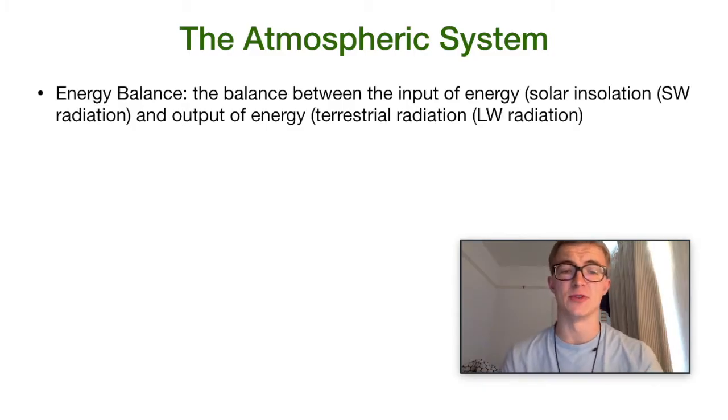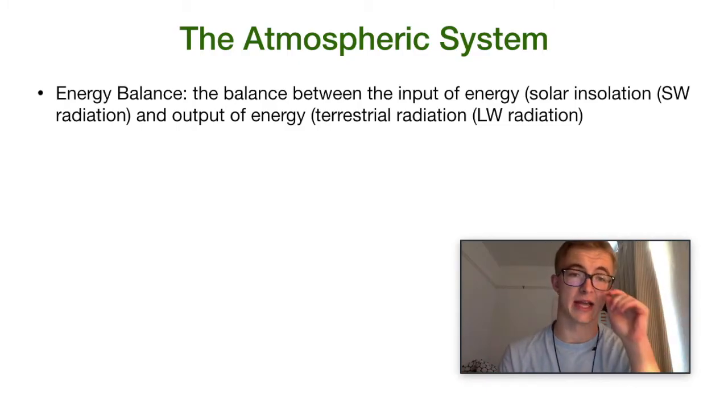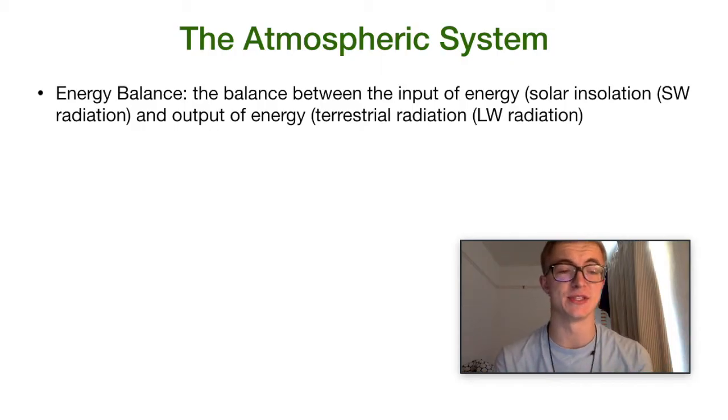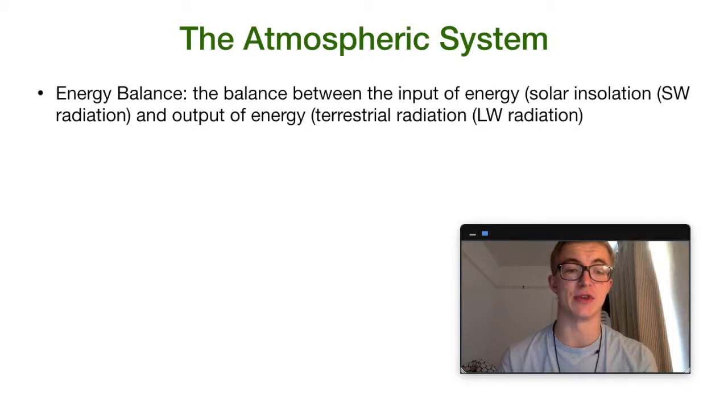So the energy balance, and this is a really key term for you guys to try and remember, is the balance between the input energy, so that's solar insolation. Insolation is that shortwave radiation coming from the sun and the output of energy. And that is energy that is re-emitted, that is absorbed and then re-emitted from the earth, the terrestrial radiation. Terrestrial meaning of earth, and that is in a longwave format. So that's crucial. Comes in a shortwave, leaves the earth as longwave radiation. And its movements and what affects it there give rise to this phenomenon known as the greenhouse effect.